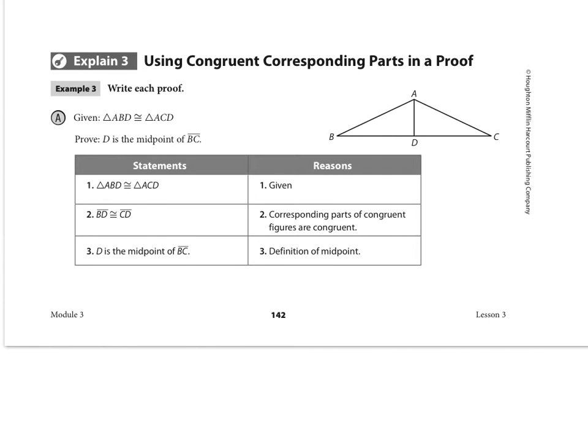You need to take note when you start a proof of the information that you are given, and it'll usually be given to you in a verbal format in writing like you see here, or sometimes there may be markings on the diagram that are given to you that you can go ahead and actually put into words in the statement column. But in this case, it's pretty straightforward. They tell us that our given is that triangle ABD is congruent to triangle ACD.